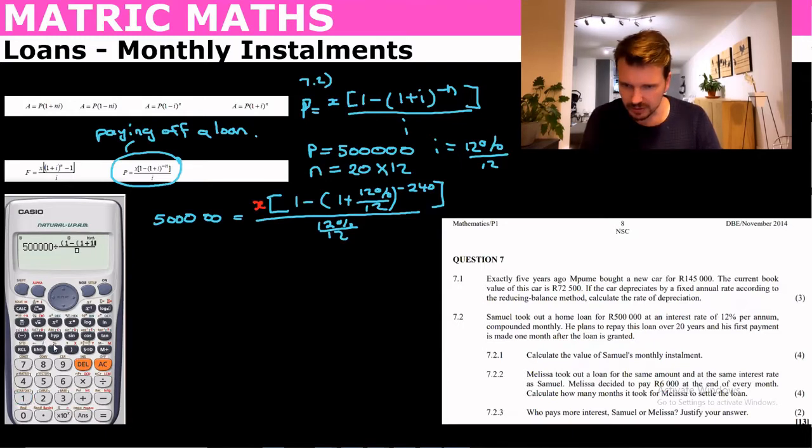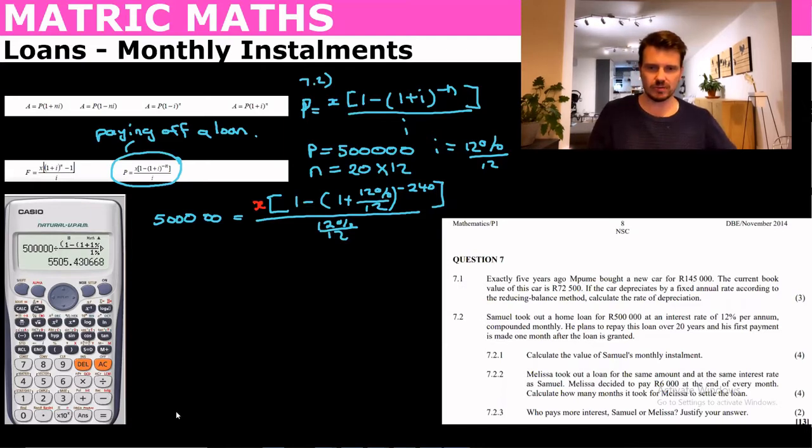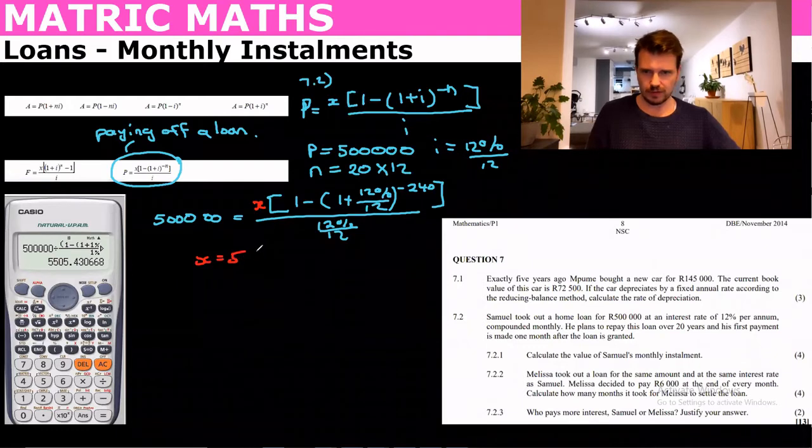I'm going to say shift percent. There we go, to the power of minus 240. Close the brackets and then I divide that by 1%. And that's going to give me my payments of 5,500 rand and 43 cents.